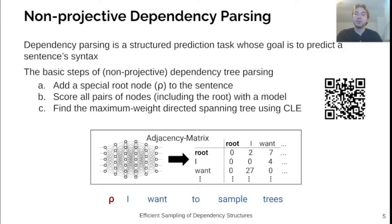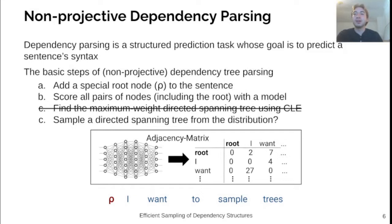Normally, we then decode using the Chu-Liu-Edmunds algorithm to find the maximum weighted directed spanning tree. We've previously discussed decoding algorithms for this setting, and you can find our paper on this using the following QR code.